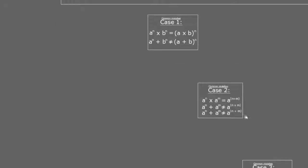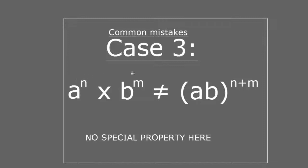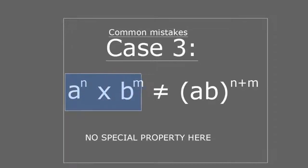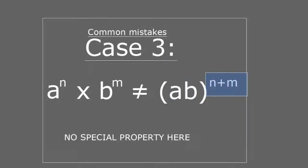That is a big mistake. In the third case, there's no special property when you have two different base numbers and two different exponents — you just have to work with each base and its own exponent separately, then multiply the results. You cannot separate this into A to the N multiplied by B to the M. What you have to do is keep them together: because they are different base numbers and different exponents, treat each pair independently.